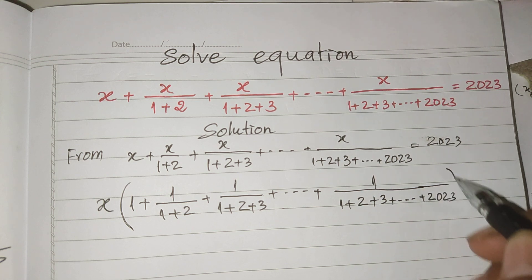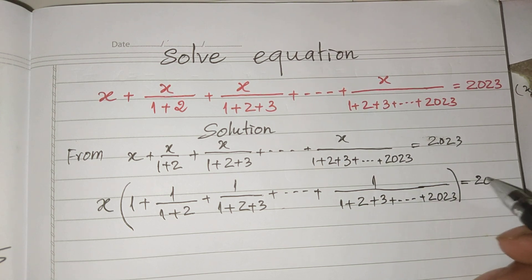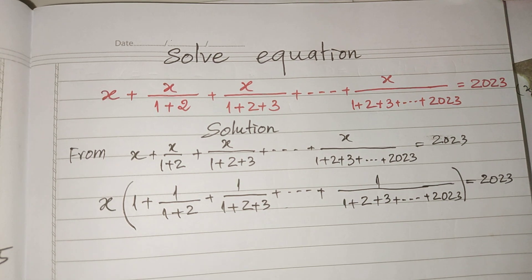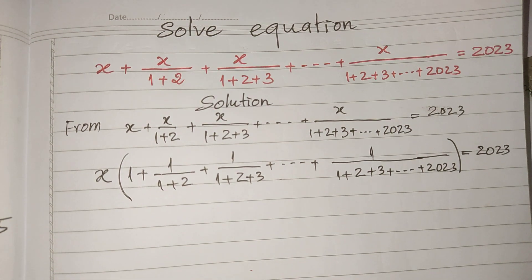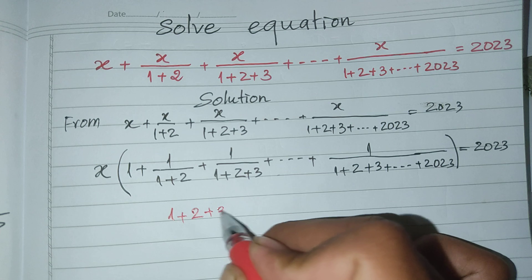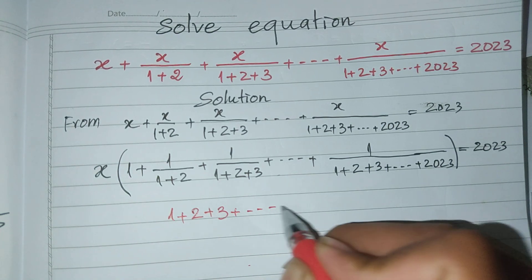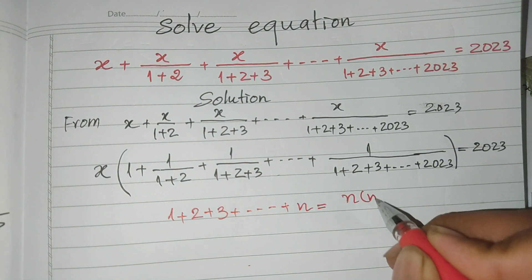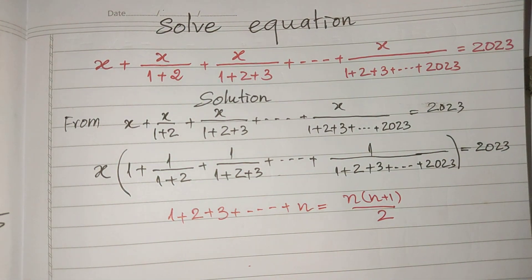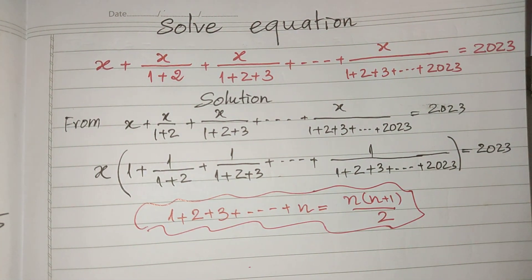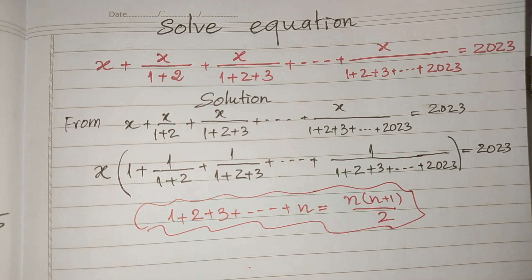Now to solve this equation we must use the arithmetic series formula that we know: 1 plus 2 plus 3 plus ... plus n equals n times (n+1) divided by 2. Now consider the term 1 divided by (1+2).